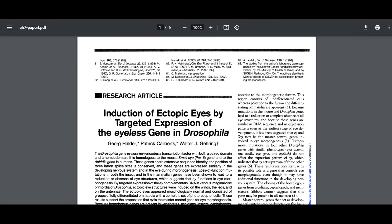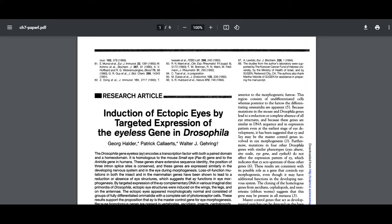For the second experiment, fast forward to 1995 to a paper titled Induction of Ectopic Eyes by Targeted Expression of the Eyeless Gene in Drosophila. Since 1915, researchers have been aware of a gene in Drosophila called Eyeless. Eyeless encodes a transcription factor that regulates the expression of other genes involved in the morphogenesis of eyes. When Eyeless is knocked out by a mutation, the fruit fly fails to form eyes. Hence, the gene is named for what happens when something goes wrong with it.